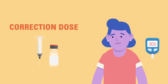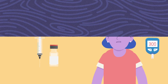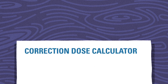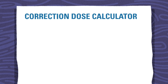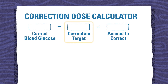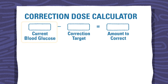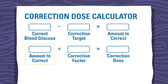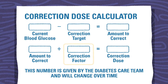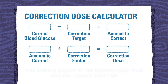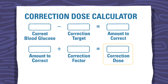To calculate the amount of insulin to give in a correction dose, you can follow this simple formula. First, subtract the child's correction target from the current blood glucose — the difference is the amount you need to correct. Second, divide that amount by the child's correction factor, a number given by the diabetes care team that may change over time. The result is the number of units of insulin needed to correct the child's blood glucose.